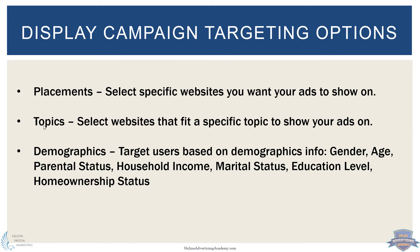Somewhat similar to keywords, you can also select by topics — you select websites that fit a specific topic you want your ads to show on. So if a website is categorized as a particular topic, maybe it's news, real estate, cars, business, or software, you can select particular topics. For example, if somebody's researching accounting software, you can pick something similar to that as a topic. If you're not quite sure which keywords to target or which placements, because there are so many small blogs and forums, you can do broad topic targeting and find other websites you weren't aware of that fit a relevant topic for your product or service.